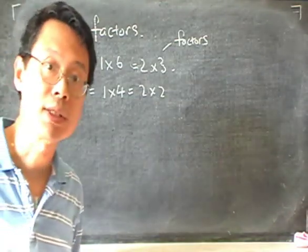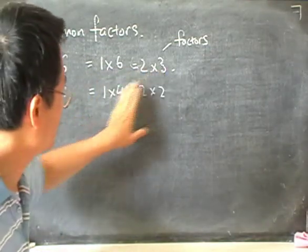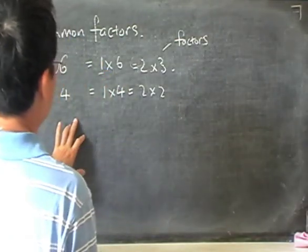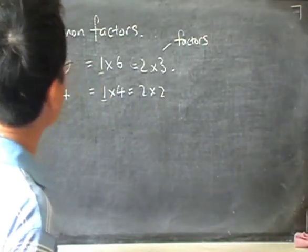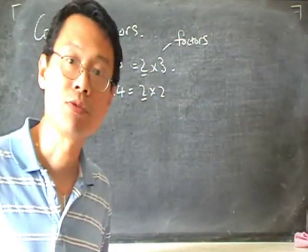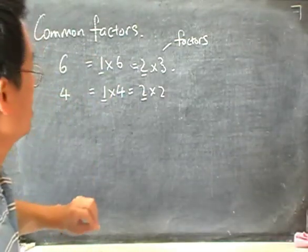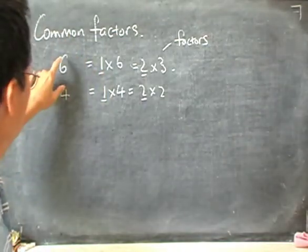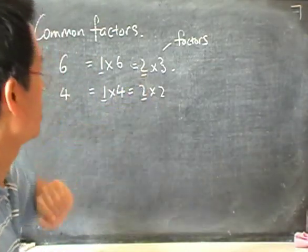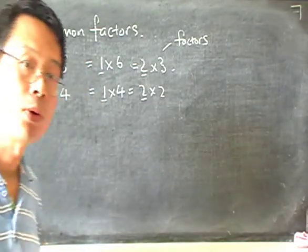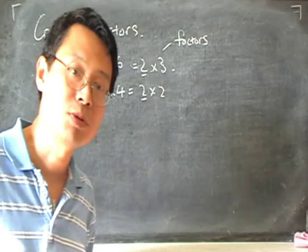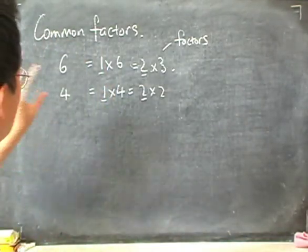Now, if I look at these two numbers — six and four — and look at their factors, you see that some of them are the same. One is a factor of six, and one is also a factor of four. Now, two is also a factor of both six and four. If we can find factors that are the same in two numbers, we call those the common factors. So I can say that two is a common factor of six and four. I can also say that one is a common factor of six and four — though one is a common factor of all numbers, of course. So that's the meaning of common factors.